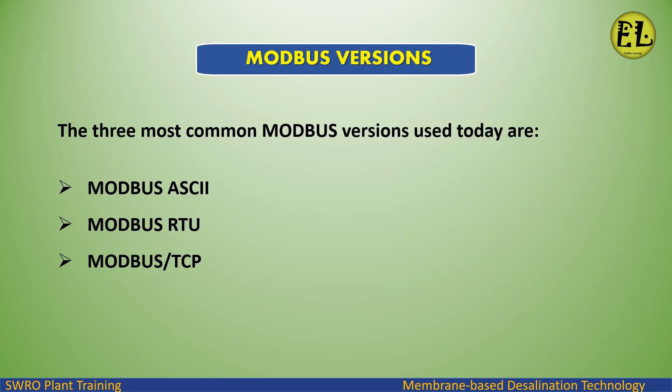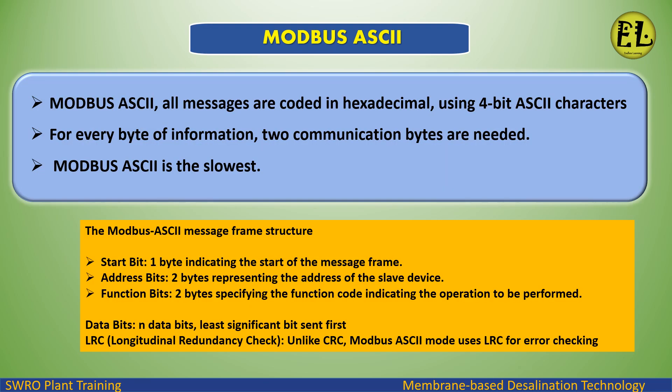The three most common Modbus versions used today are Modbus ASCII, Modbus RTU, and Modbus/TCP. Modbus ASCII — all messages are coded in hexadecimal using 4-bit ASCII characters. For every byte of information, two communication bytes are needed. Modbus ASCII is the slowest version. The Modbus ASCII message frame structure is as shown.